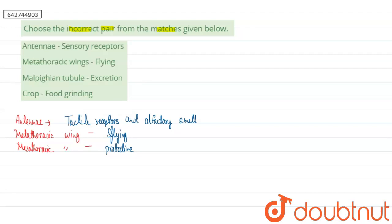Talking about our third option, the malpighian tubules, they are generally associated with excretion. They are the main excretory organ of the cockroach and help in excretion.